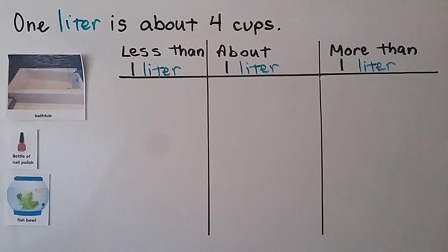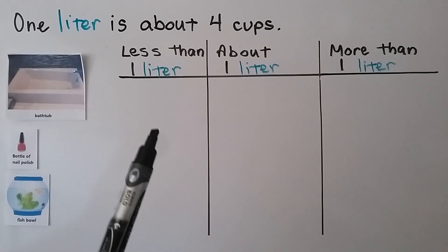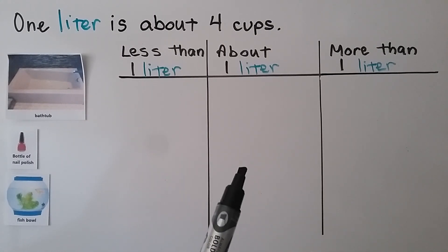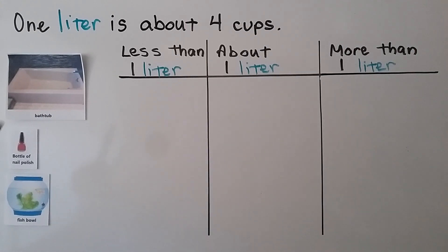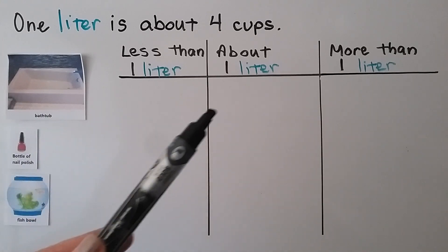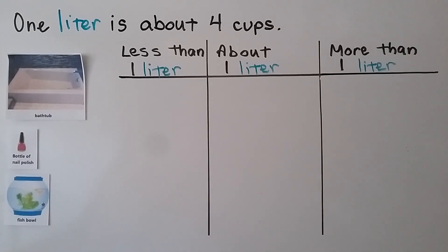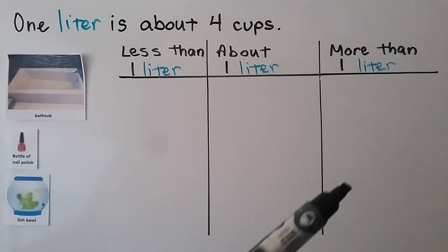One liter is about four cups. We need to put these pictures in the correct column: less than one liter, about one liter, or more than one liter. Where do you think the bathtub would go? Remember that one liter is about four cups. If you said the bathtub is more than one liter, you're right.